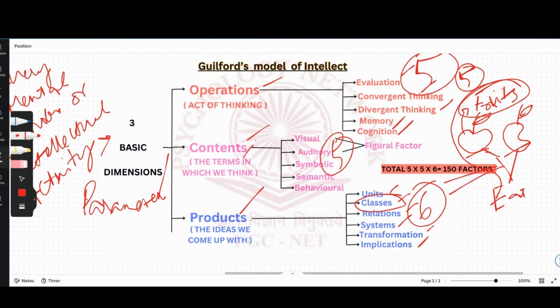We saw in other factor theories like Spearman's two-factor theory, which is the G and the S, and then we saw in Thurston's group factor theory which has nine factors. But Guilford's model of intellect, in total, has 150 factors in all.